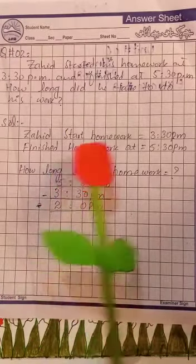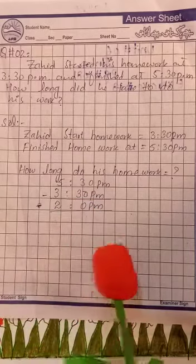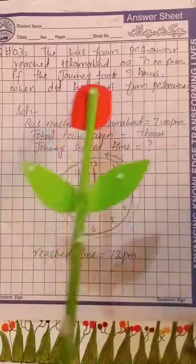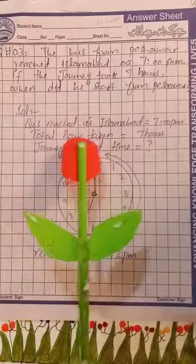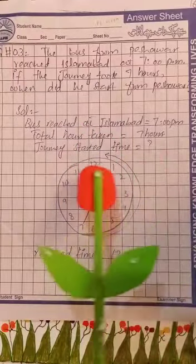Question number two: Zahid started his homework at 3:30 p.m. and finished at 5:30 p.m. How long did he take to do his homework? So 5:30 he finished homework and started homework at 3:30. So we subtract them: 30 minus 30 is 0, 5 minus 3, the answer is two.